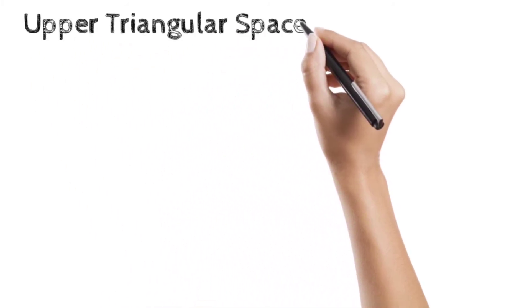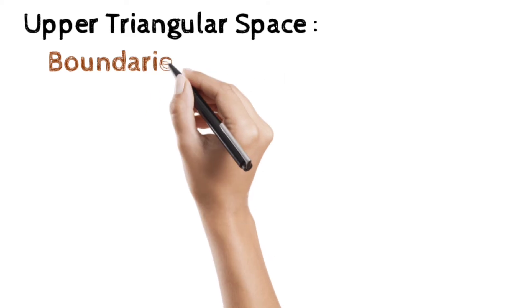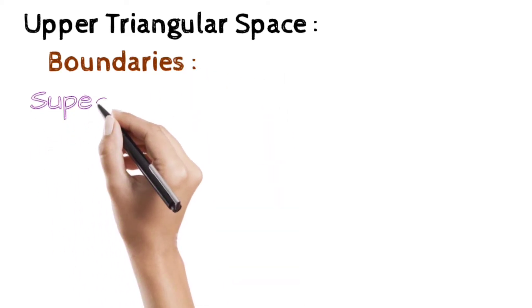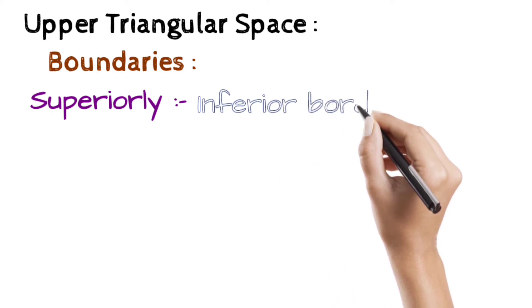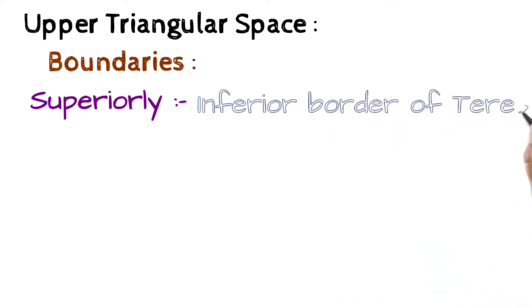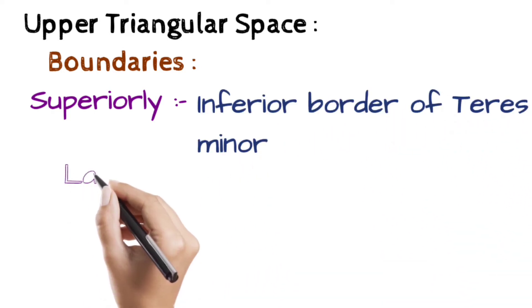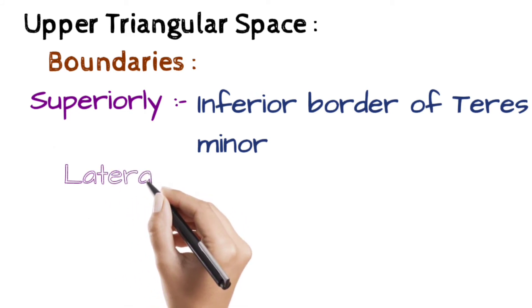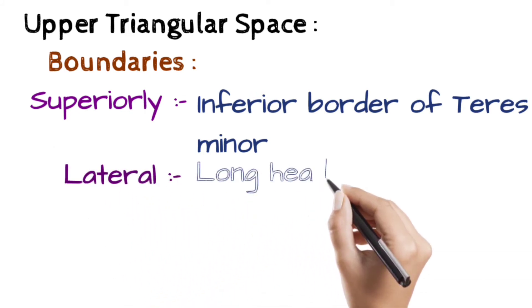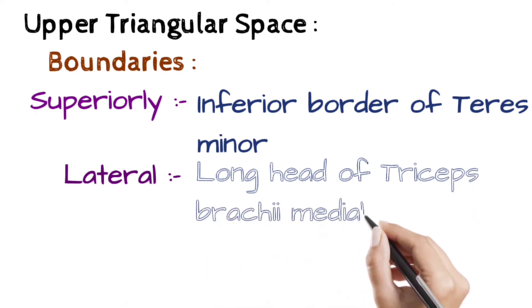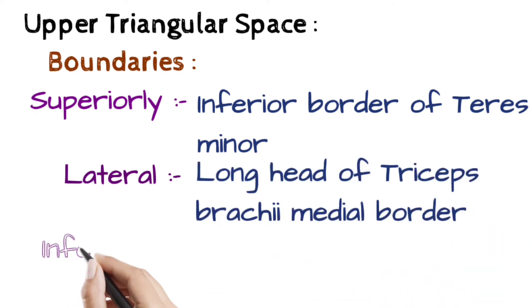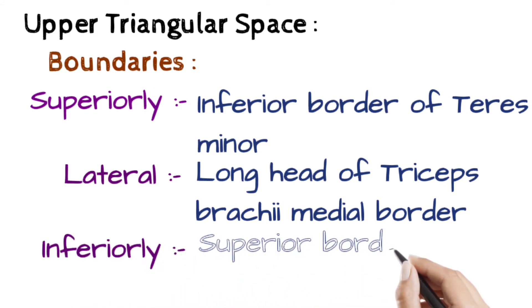Upper triangular space. Boundaries: Superiorly, inferior border of teres minor. Laterally, long head of triceps brachii medial border. Inferiorly, superior border of teres major.